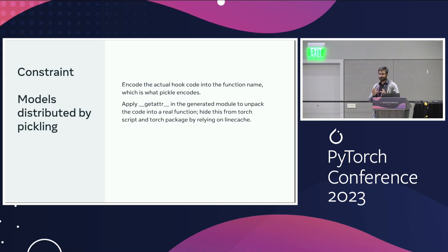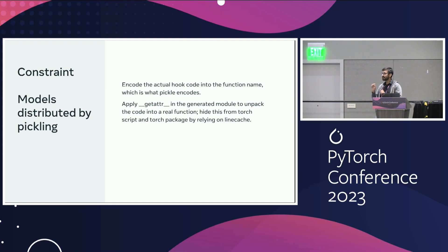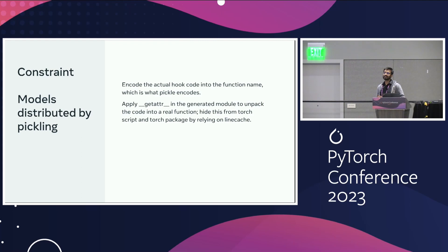Torch Package is source code plus state distributed together, but if you're distributing your model through pure pickling, you don't get the source code anymore — which is very painful if you're dynamically generating code. When pickle pickles a function, the only thing it writes as opcode is the function name. In completely unrelated news, if you base32 encode something, 31 characters are safe as identifiers, and there's an equal sign. So if you replace the equal sign with an underscore, you can generate a valid Python identifier. We took the hook code, zipped it, base32 encoded it, and made it the function name. That way when it gets pickled, it gets distributed safely. Then when you use __getattr__ inside the module, you can decode it, unzip it, exec it, and suddenly the hook exists again.